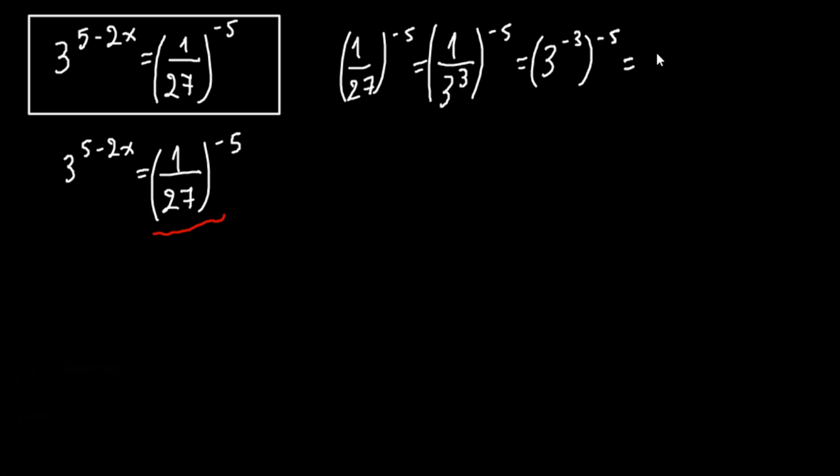We multiply the exponents, so we have minus 3 times minus 5, which is plus 15. So if we write this, we have 3 raised to the 5 minus 2x equals 3 raised to 15.